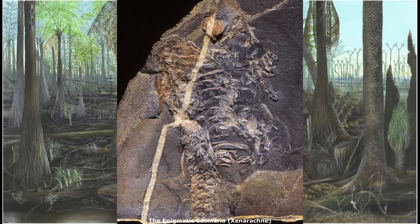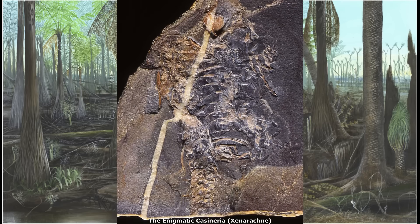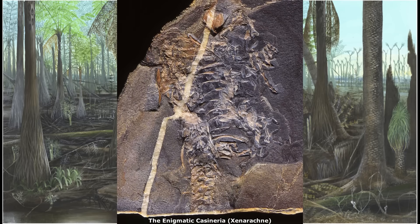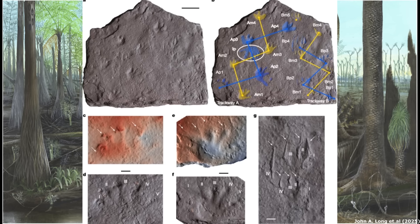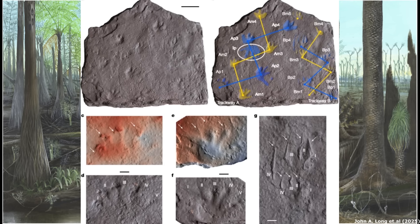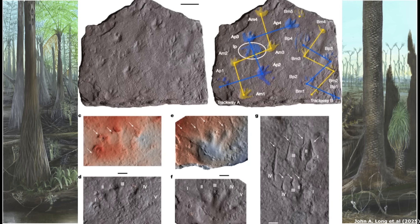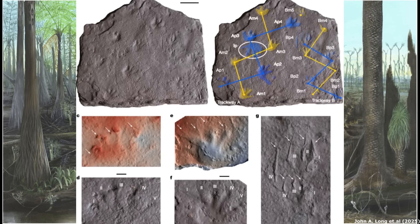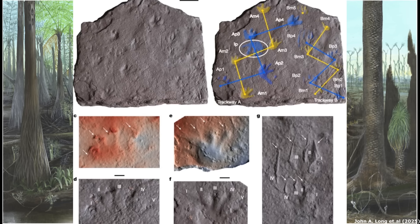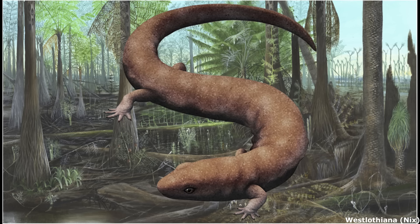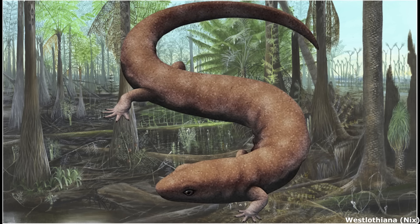Of course, determining which Carboniferous, vaguely lizard-like animals are actually members of amniota is an incredibly difficult task, given that their fossils are quite rare and fragmentary. However, the very recent discovery of clawed footprints dating to the early Carboniferous of Australia, circa 358–354 million years ago, have shown that amniotes originated much earlier than previously thought, with the tracks possibly belonging to a basal sauropsid, the group that would later produce the modern reptiles and birds. This indicates that amniotes probably first appeared during the latest Devonian, close to the Carboniferous boundary.